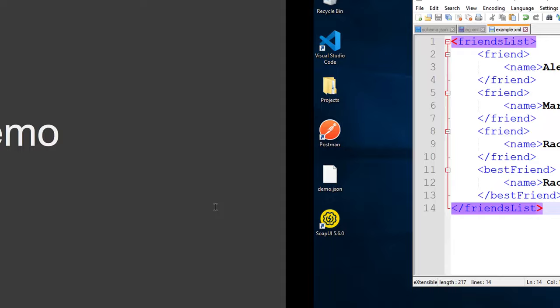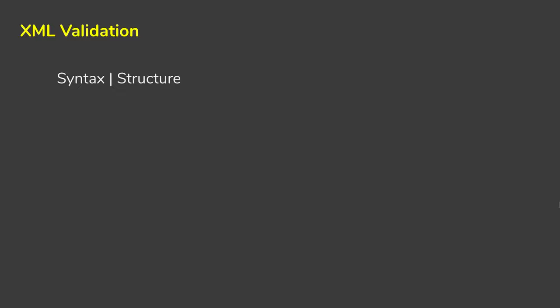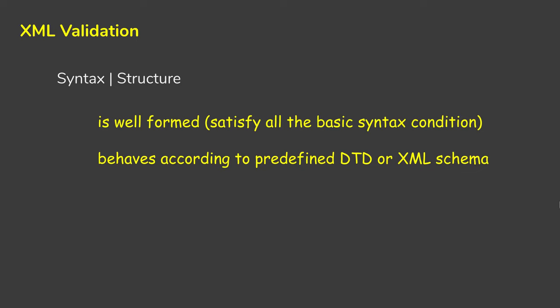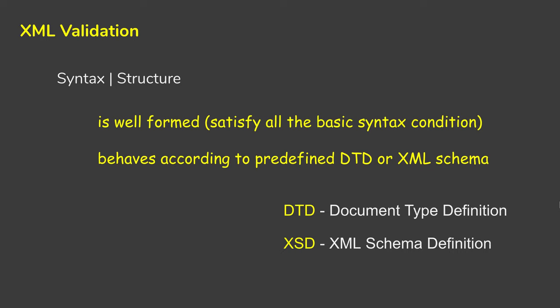When we talk about XML validation, we are validating the syntax and structure of the XML message. We check that the XML is well-formed — that it satisfies all basic syntax rules. We can also validate our XML against a predefined schema, which can be a DTD (Document Type Definition) or an XSD (XML Schema Definition). The schema specifies the structure, mandatory fields, data types, and content rules — acting like a grammar check.